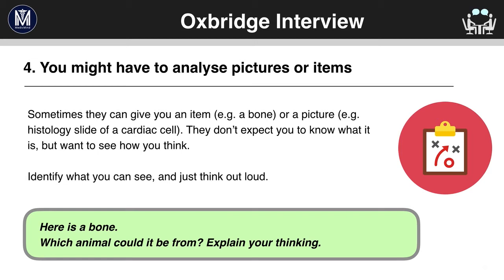Here's an example: 'Here's a bone — which animal could it be from? Explain your thinking.' For this kind of scenario, you first want to talk about the size of the bone — is it big or is it small? That can help you identify what type of animal it could be. Then you could look at different features and they'll talk it through with you. It's more a discussion than a Q&A.